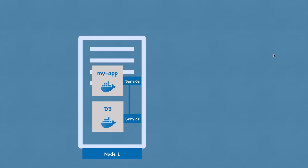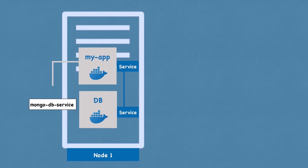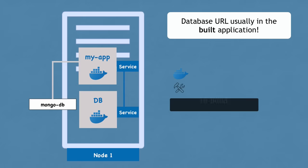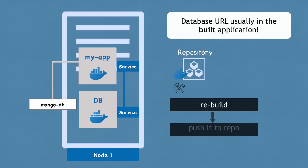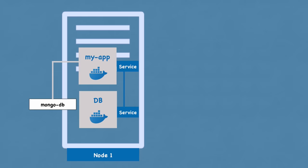Parts communicate with each other using a service. My application will have a database endpoint — let's say MongoDB service — that it uses to communicate with the database. But where do you configure this database URL? Usually in an application properties file or as an environment variable — inside the built image of the application. If the endpoint or service name changed to MongoDB, you'd have to adjust that URL in the application, rebuild it, push it to the repository, pull the new image in your pod and restart the whole thing — a little tedious for a small change like a database URL.